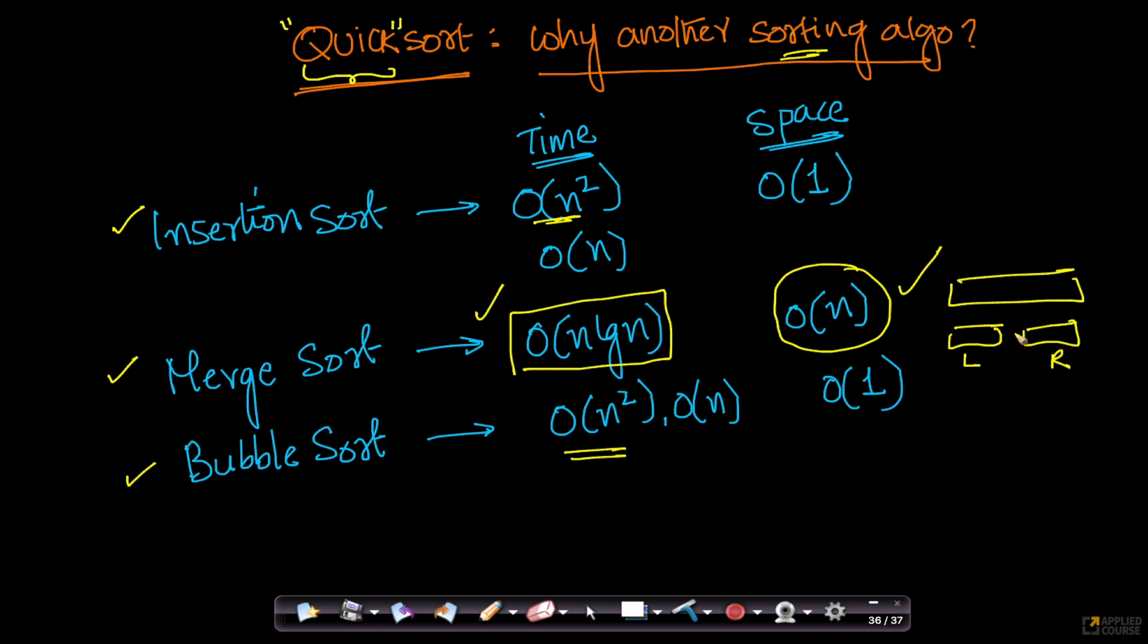If you recall merge sort when we discussed earlier in this course, because of this we are using lot more space than we should. In the case of insertion sort and bubble sort, space complexity is only order of 1.